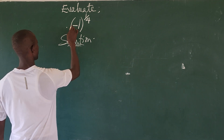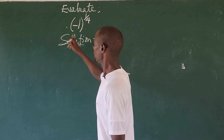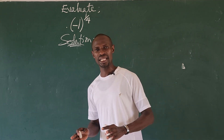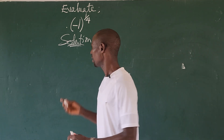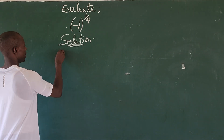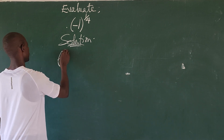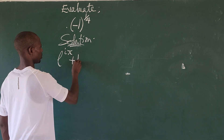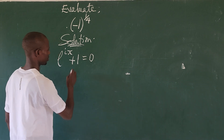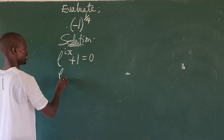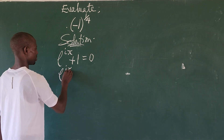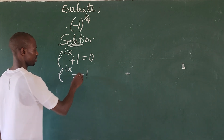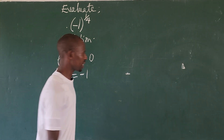We have to find a way of rewriting the minus one in here. So we consider the Euler identity: e to the power of iπ plus one equals zero. If we rearrange, we get e to the power of iπ equals minus one. So here we have minus one, and from the identity we also have minus one.